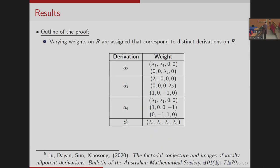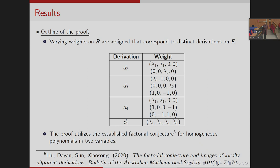Here is a short outline of the proof. To prove these statements, we defined varying weights on the k-algebra R corresponding to these derivations, as mentioned in the table. These weights helped significantly in completing the proofs. The second key tool used is the Factorial Conjecture, which has been proved for homogeneous polynomials in two variables by Leo and Son in 2020.